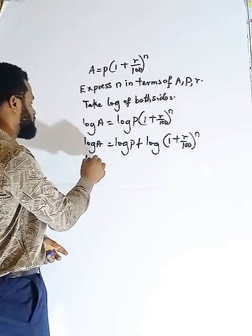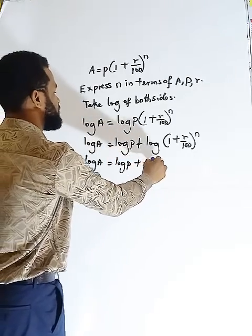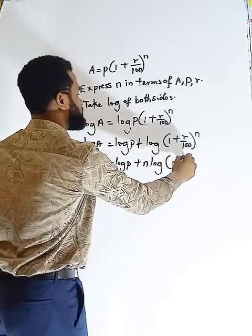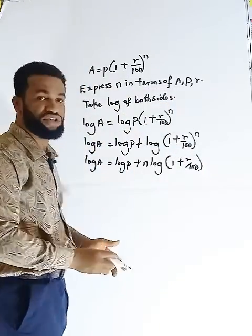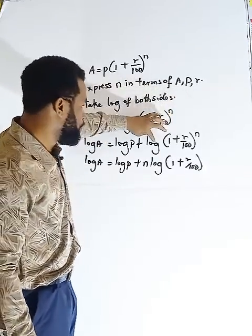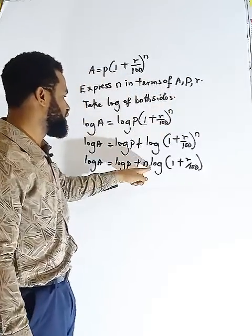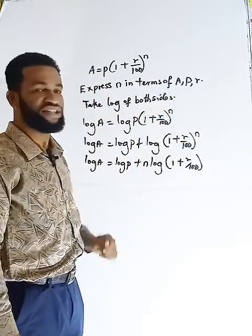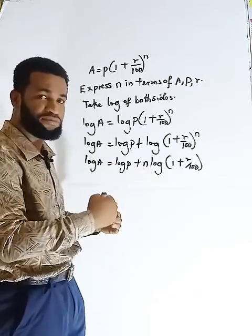The next thing is log A is equal to log P plus N log 1 plus R over 100. Look at this. It has come down. Why? Because according to the law, we call it the power law. Whenever there is a power, log of an expression with a power, the power can come down and multiply the expression while it lifts the power. So it can climb from wherever it is and comes down.